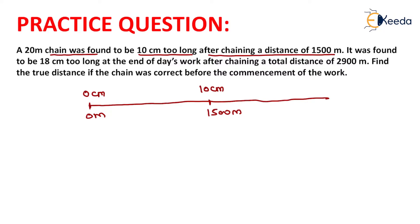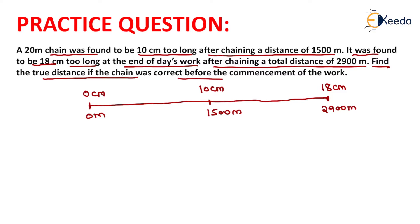It was found to be 18 centimeters too long at the end of the day's work after chaining a total distance of 2900 meters. This means that if we measure the 2900-meter length, the extension in the chain was 18 centimeters. We have to find the actual distance between the first and the last point, given that the chain was correct before the commencement of work. Now for the first 1500 meters...